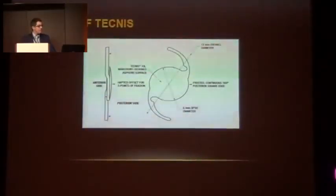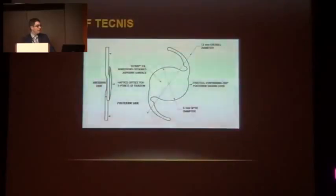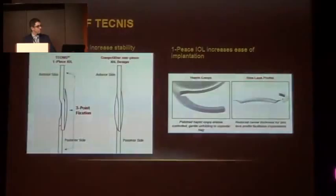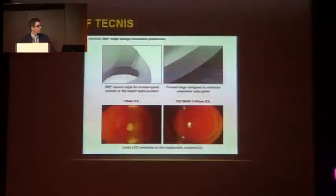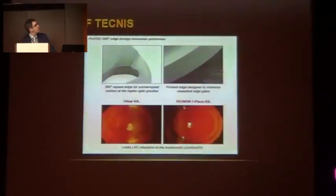The lens design has the diffractive structure on the anterior surface, while the posterior surface is the refractive surface. We can see three points of fixation to increase stability, and the inner ring increases ease of implantation. The edge design increases protection, and the cross-edge design minimizes unwanted edge glare.